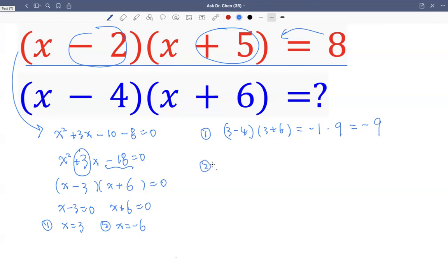For the second solution, if x equals negative six, then negative six minus four times negative six plus six equals zero. This factor is zero, so we get two solutions.